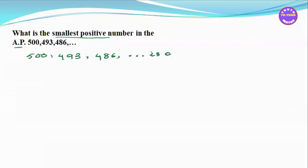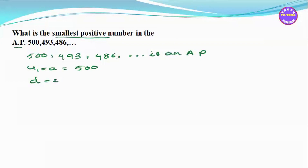This sequence is an AP. The common difference d is 493 minus 500, which equals minus 7. So d is the same throughout.